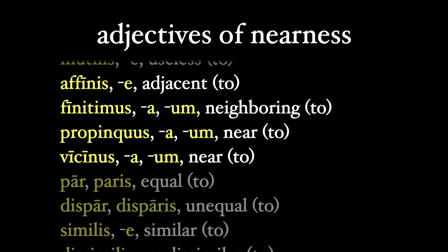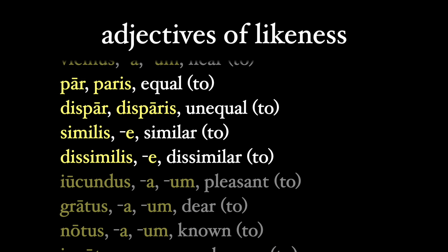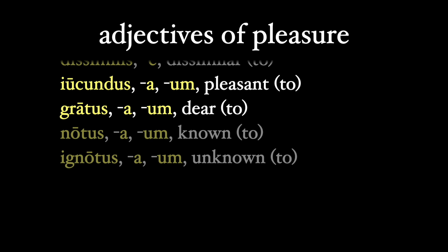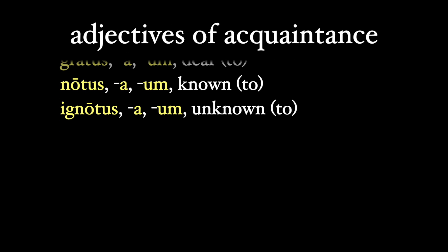And we also have adjectives of nearness: affinis, finitimus, propinquus, and vicinus. And adjectives of likeness: par, dispar, similis, and dissimilis. And these adjectives have meanings around pleasure: iucundus and gratus. And these are adjectives of acquaintance: notus and ignotus.